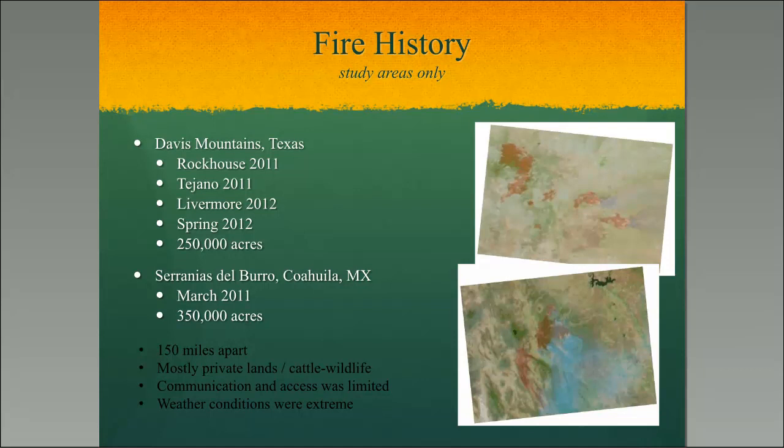Those are mighty large landscapes, comprised mostly of private lands with cattle and wildlife production, very difficult to access with very few roads. Weather conditions were extreme, and what was really interesting is those two study areas were only 150 miles apart. The Serrania del Burro is considered one of the major supercell-producing areas in this part of the country, right behind Oklahoma. It runs between 25 and 35 inches of rain a year, while the Davis Mountains is a little lower. Both areas lie within hurricane patterns, which influenced fire patterns.